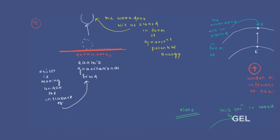Consider this is our earth surface. Now if there is any object moving from one place to another under the influence of earth's gravitational field, the object will be doing work against the influence of earth's gravitational field, and that work done will be stored inside this object in the form of gravitational potential energy.